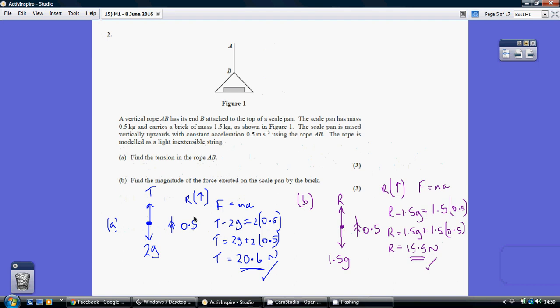So resolving upwards and using F equals MA, our net force upwards is going to be T minus 2g. That's our F. And our mass, our overall mass is 2. And we're told that our acceleration is 0.5.